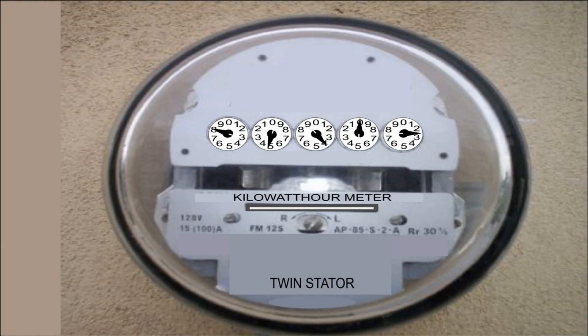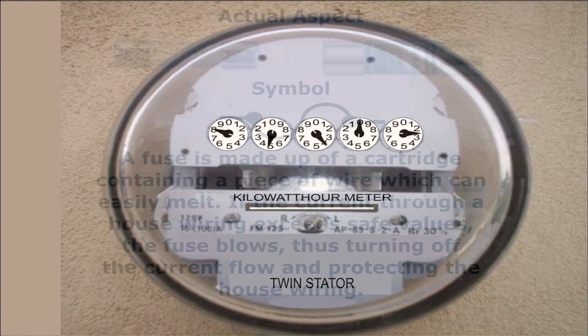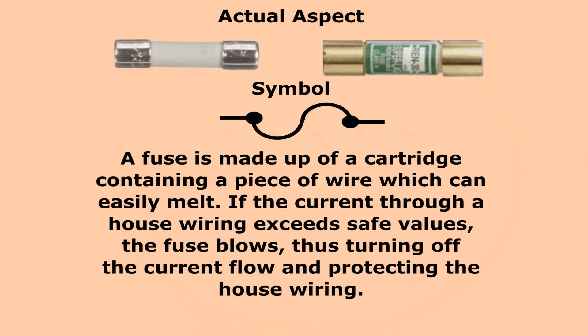Today we will talk about the schematic diagrams of alternating current circuits used at home. We'll start with the fuses. A fuse is made to blow in order to protect house wiring.